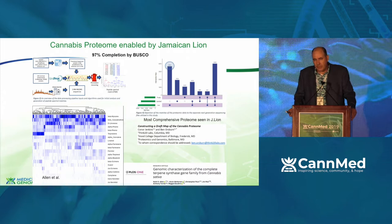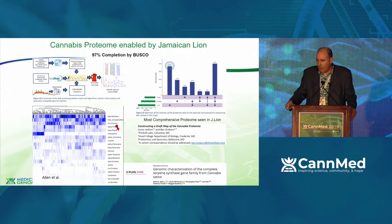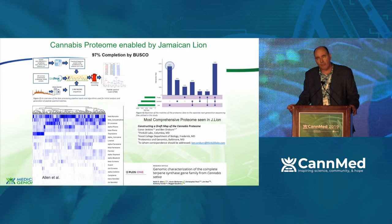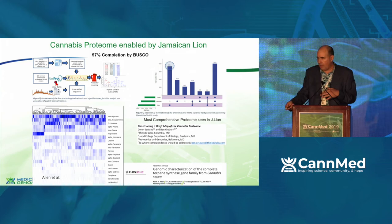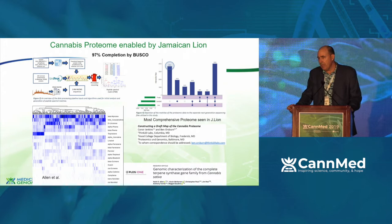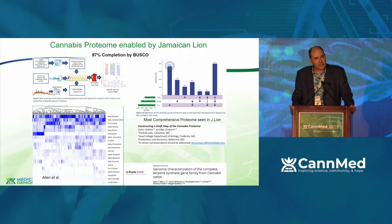The real nail in the coffin is when other people pick up the data and measure it with different techniques. There are probably members in the audience involved in the wonderful proteome work where they took cannabis proteomes measured via mass spec, got peptide signatures they could map to the Jamaican Lion reference, and found that the Jamaican Lion reference produced the most peptides matching their proteome data. Reggie and his team with Keith Allen at Steep Hill also annotated all of the terpene synthase genes and published in PLOS about unique features of those terpene genes.